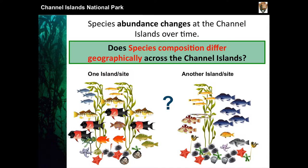I saw that abundance changes over time significantly, and we're still learning new things. The last couple of years were kind of an eye-opener in where we are in this 35-year dataset, with the highest or lowest abundance in most of the species. Species composition differed geographically, and I already told you about the oceanographic differences — the warm water and cold water variation with the different species — so you'd expect that information to show up in your data.